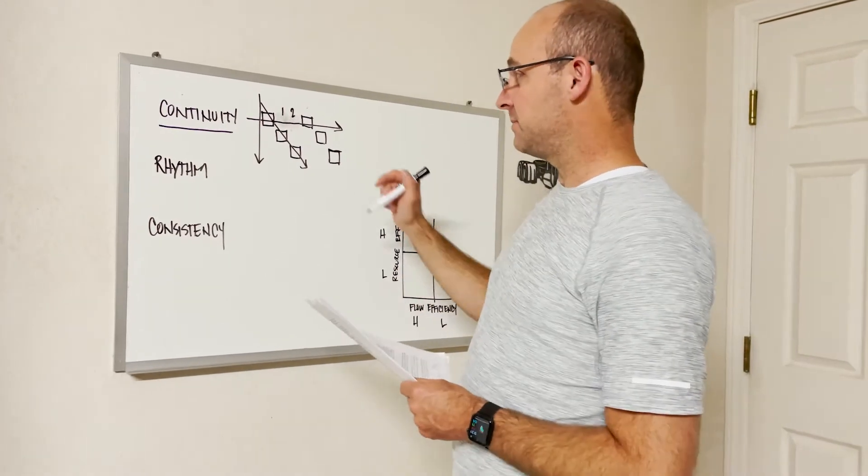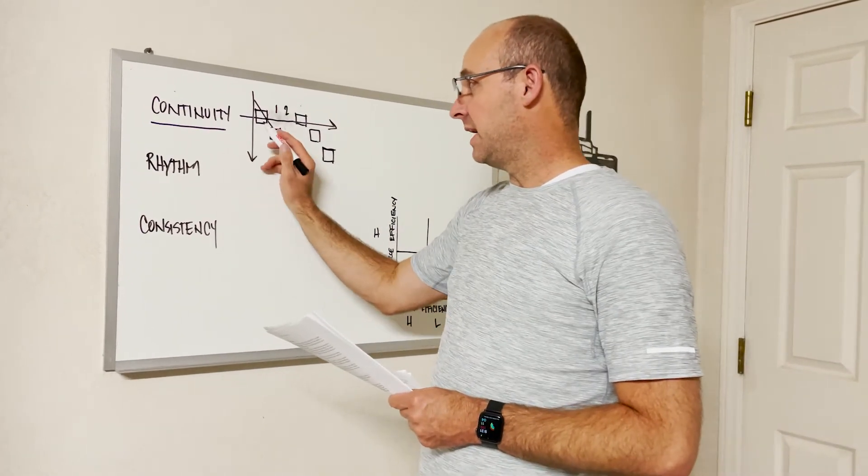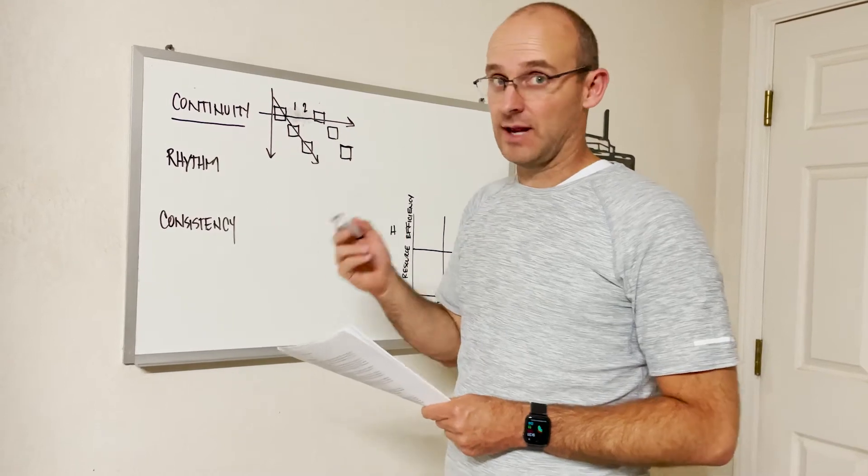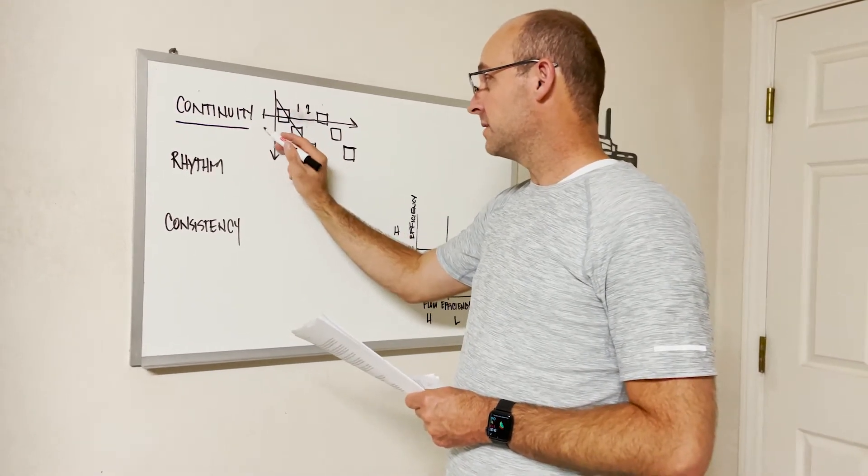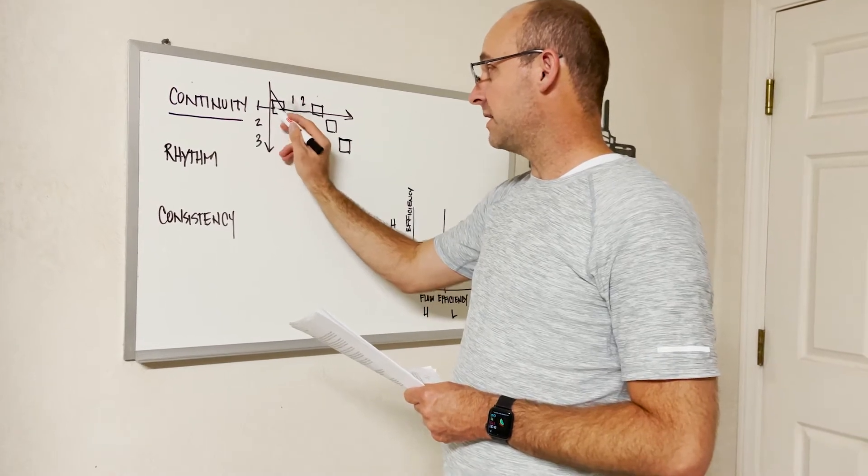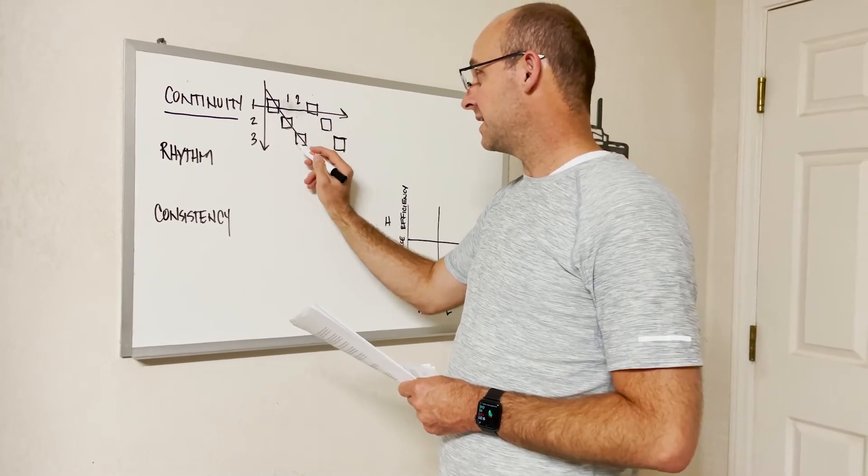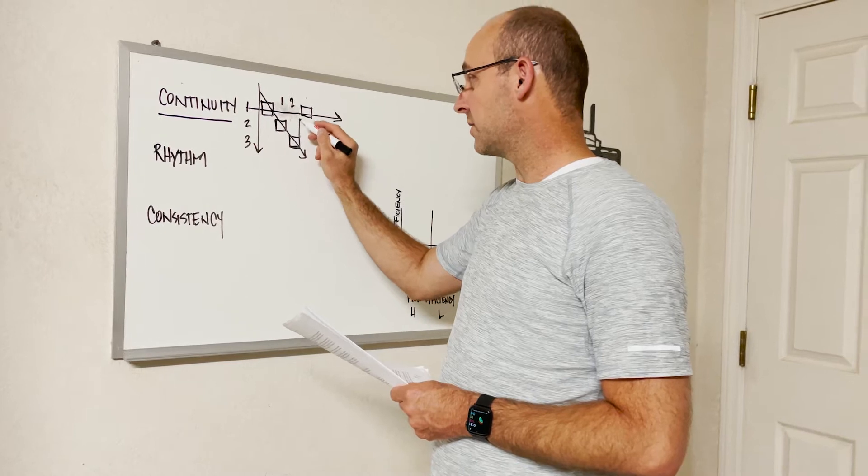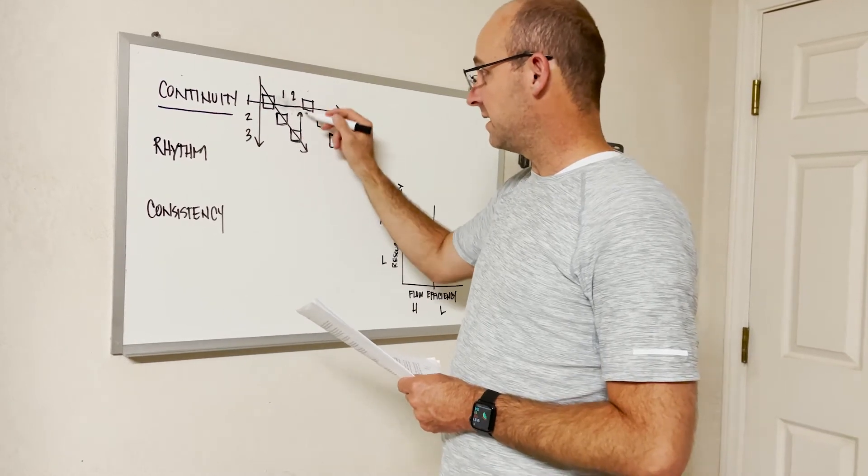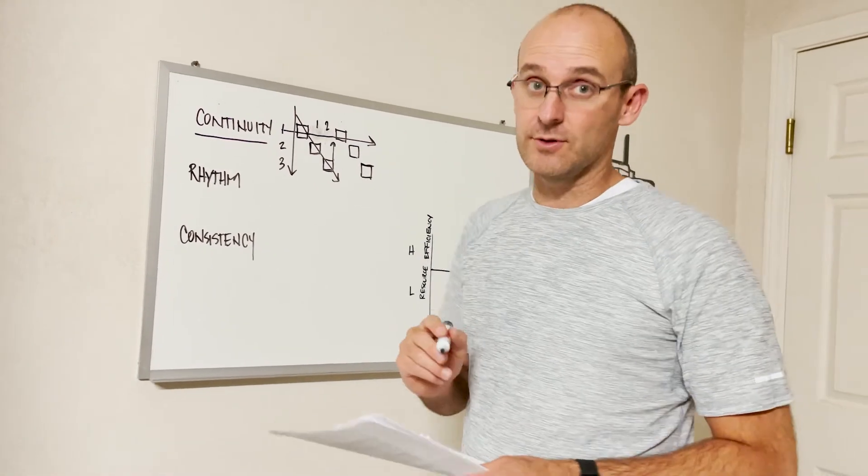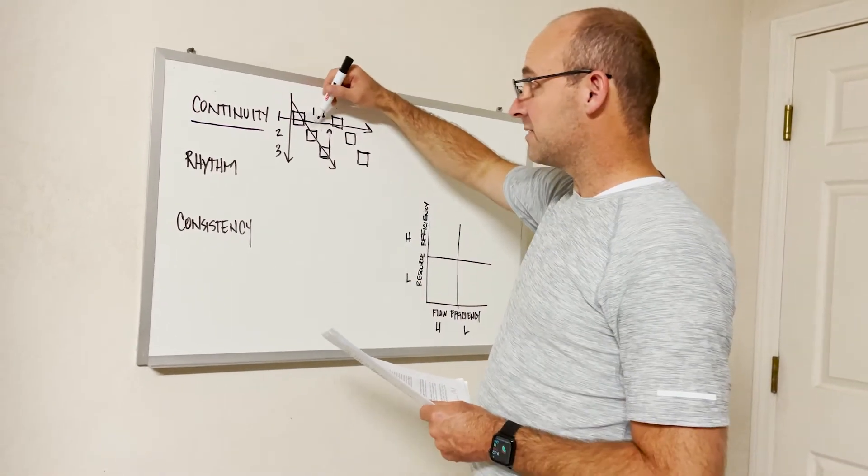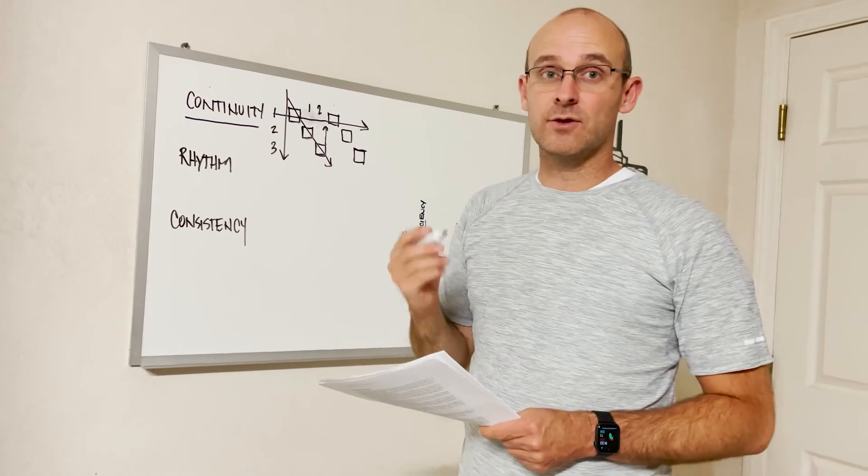Now sometimes because you have a crew, maybe this is crew number one, and you don't have a second crew. It has to go from area one to area two to area three for this activity. And it can't start this one until it's done here. And it goes one, two, three for the second activity, but with the same crew. But that creates a lack of continuity between the workflow.